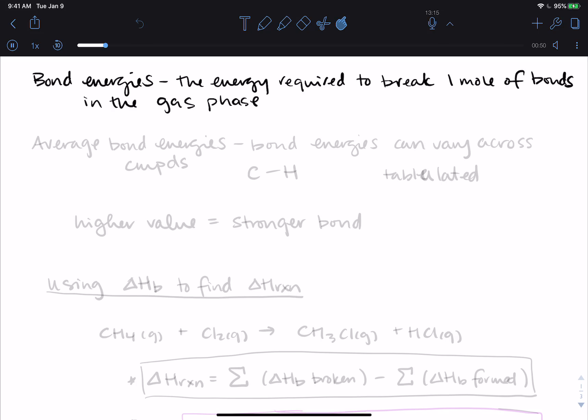Now what we will actually see reported are things called average bond energies. And so these are from averages across different types of compounds. So bond energies can vary across compounds.